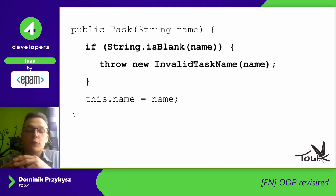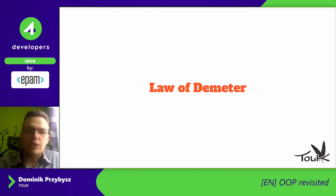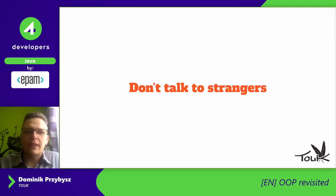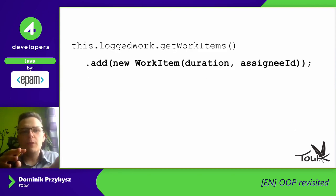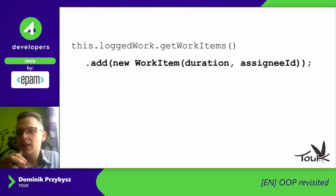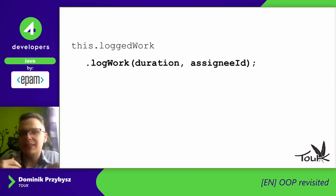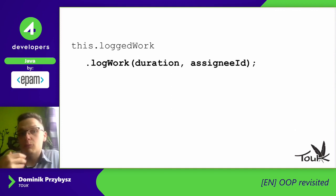When we create such information experts, we should also respect that other objects are information experts too. For that, we have the Law of Demeter, described as 'don't talk to strangers.' Imagine a task class has a 'locked work' property — that's our friend. But if we call get-works-item on that locked work and add something to it, we're talking to a stranger. Instead, we should call one method on locked work, because it's the information expert for its own internal behavior.